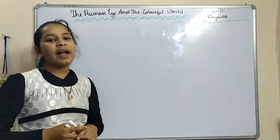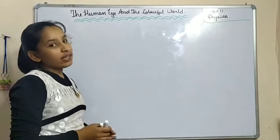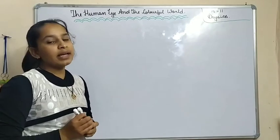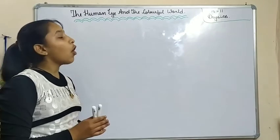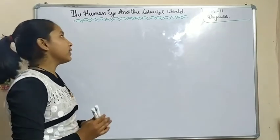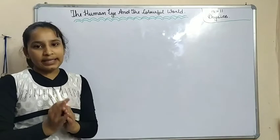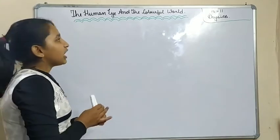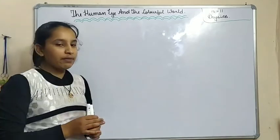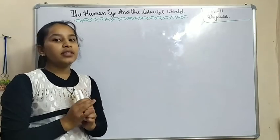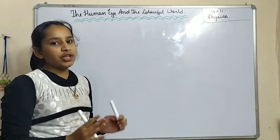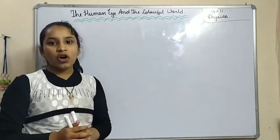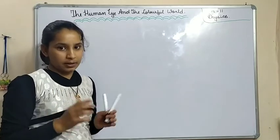Hello friends, I am Bhumika Pandey and today we will start Physics chapter number 11. The name of the chapter is The Human Eye and the Colorful World. With the name of the chapter only, we can understand that in this chapter we have to read about the eye. So first, we will draw the structure of the human eye.